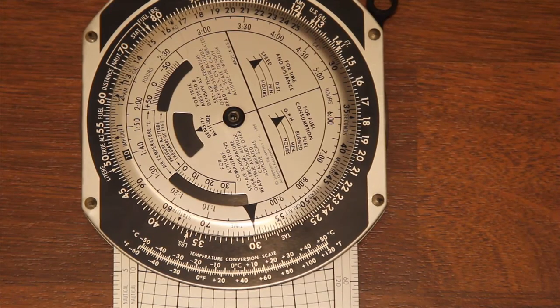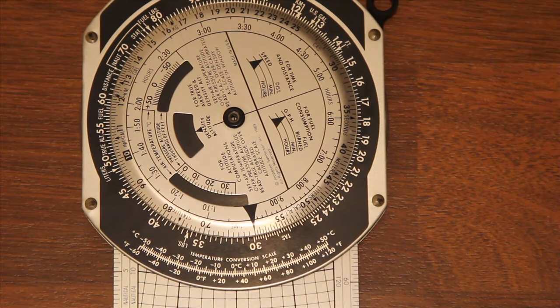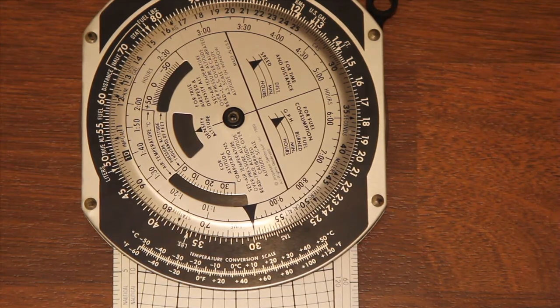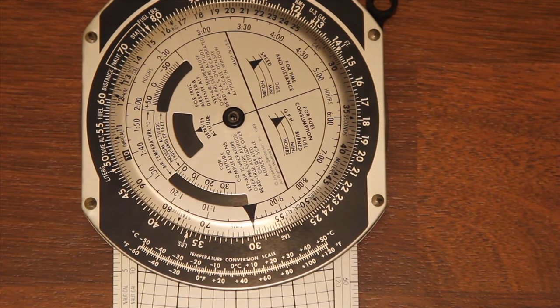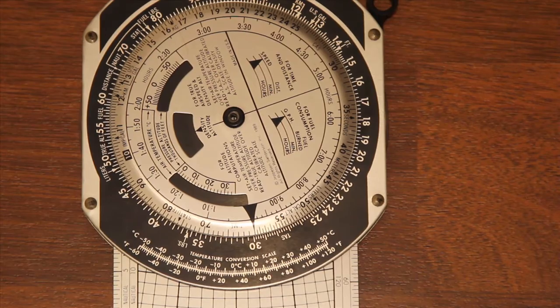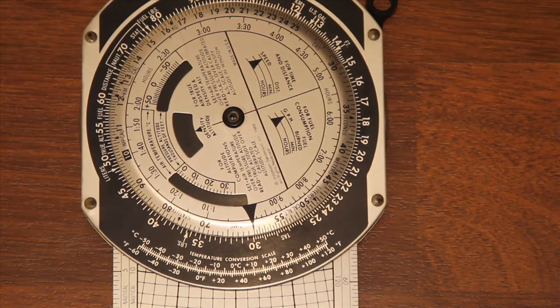So that's a really quick overview of the speed, time, and distance on an E6B flight computer. You can use this if you're sailing, you can use it if you're in a car, you can use it pretty much anywhere you like, anywhere that you would need to do speed-time-distance calculations.